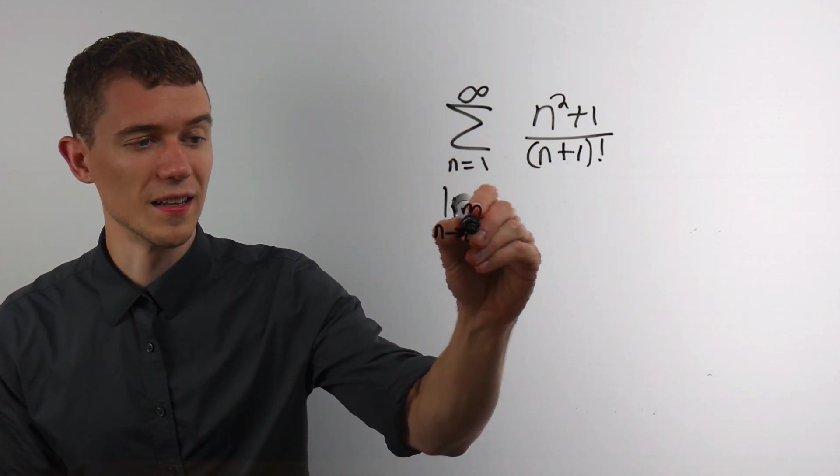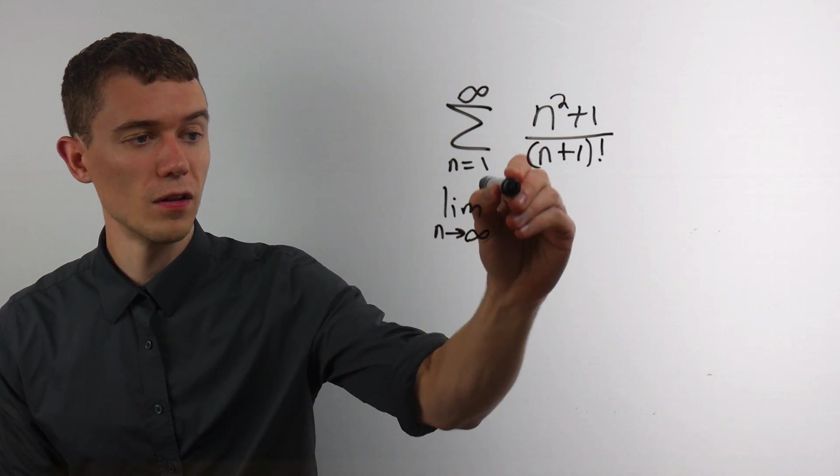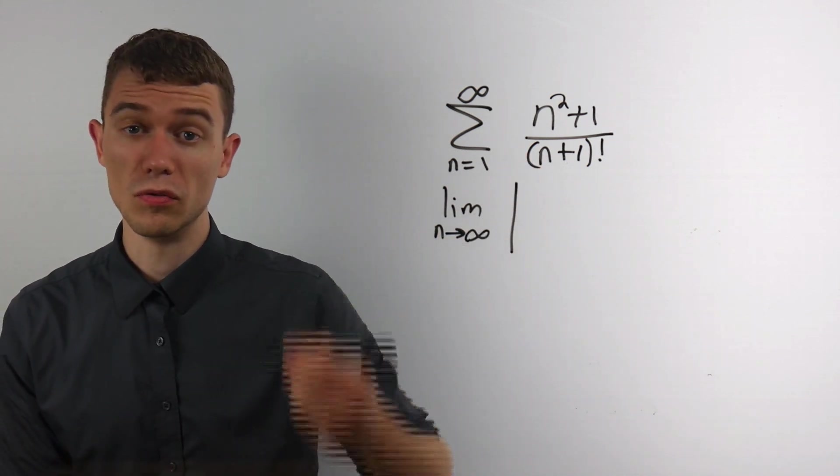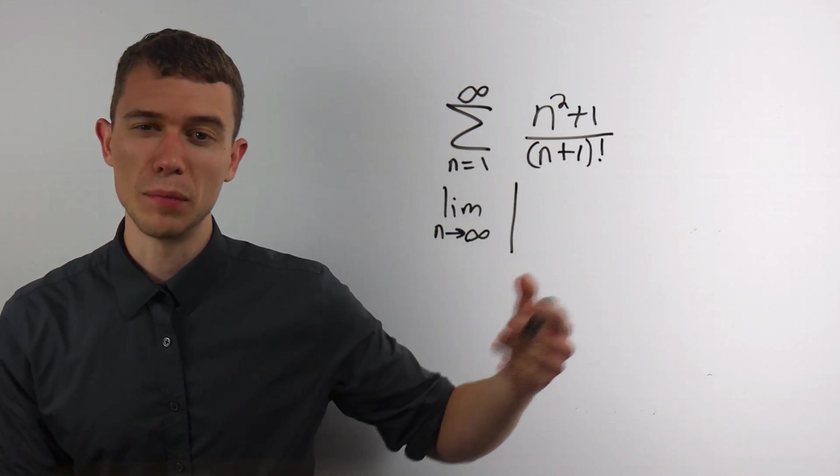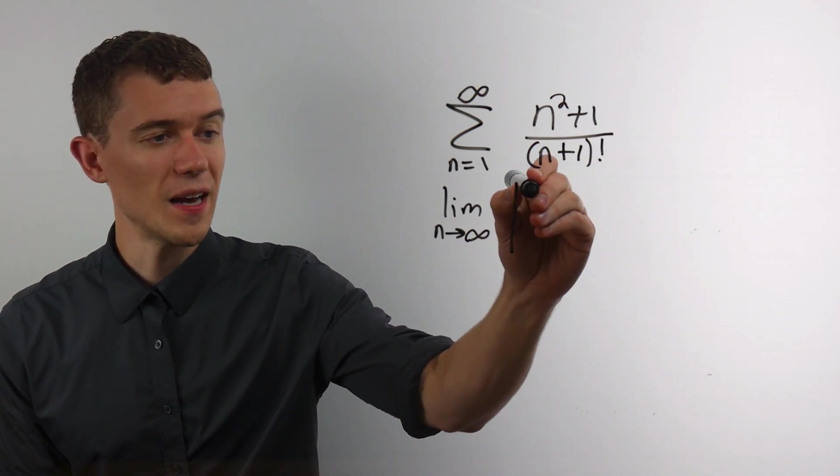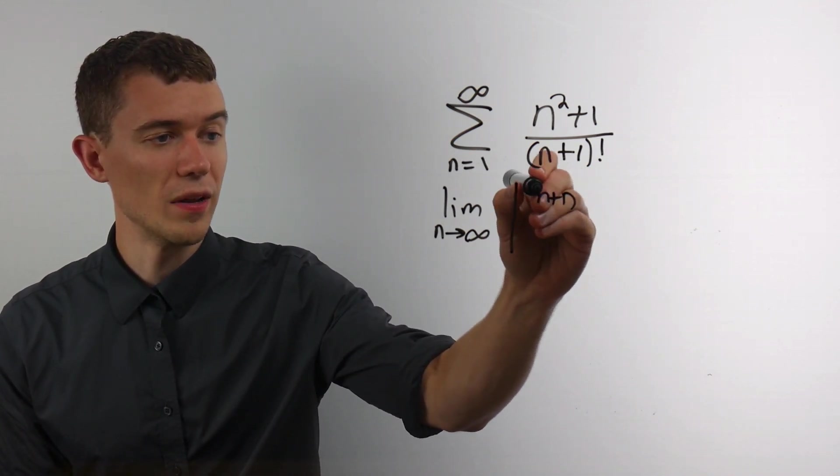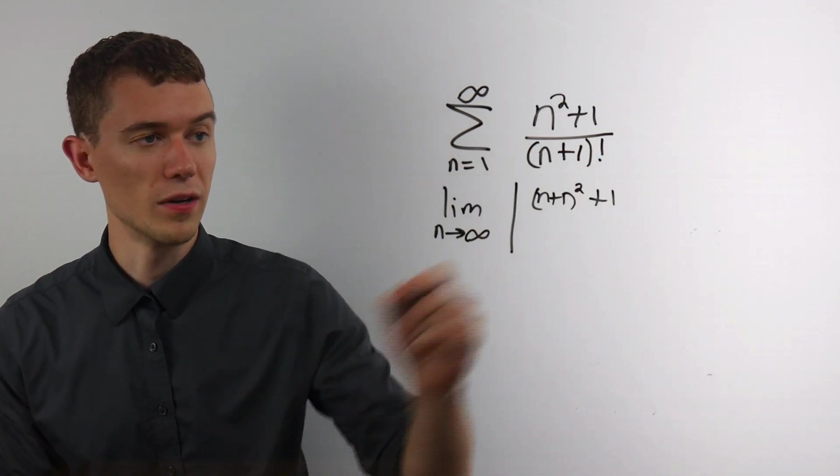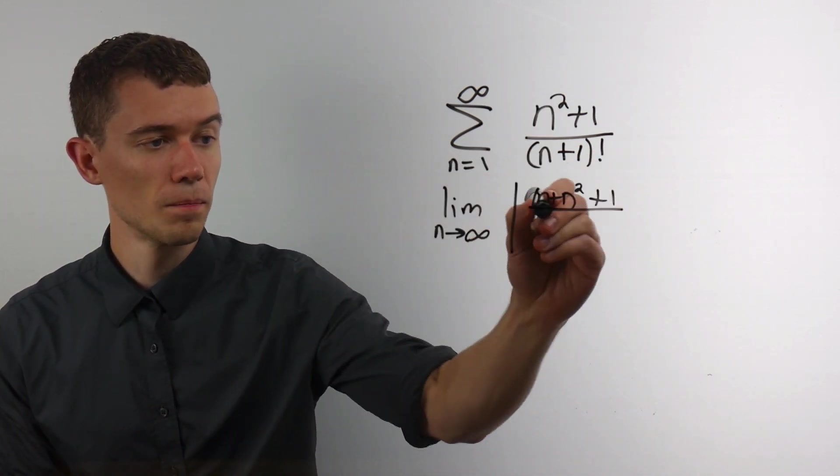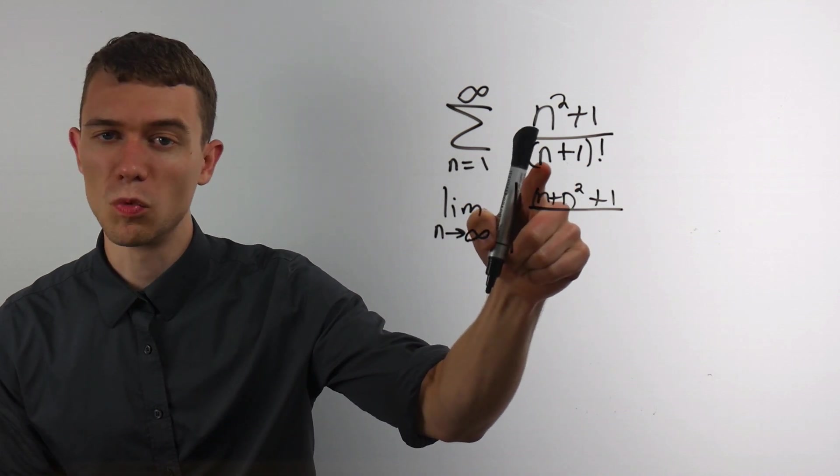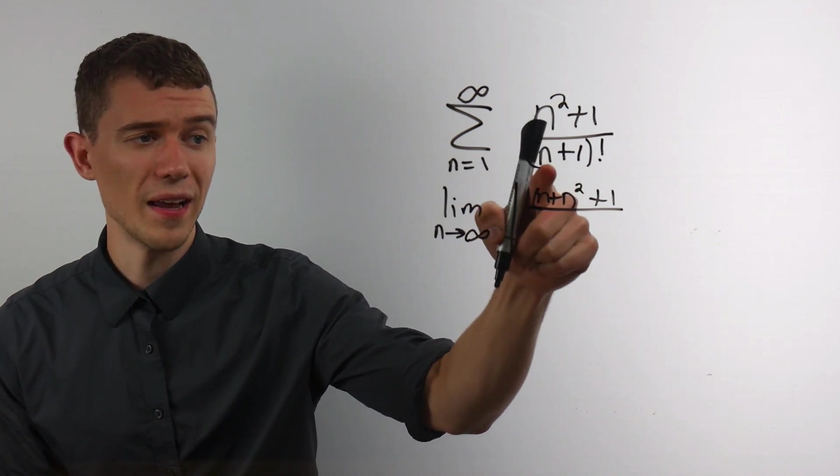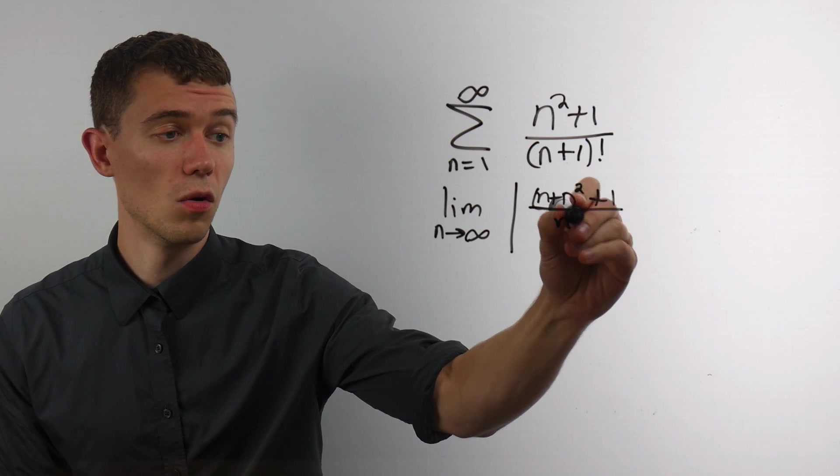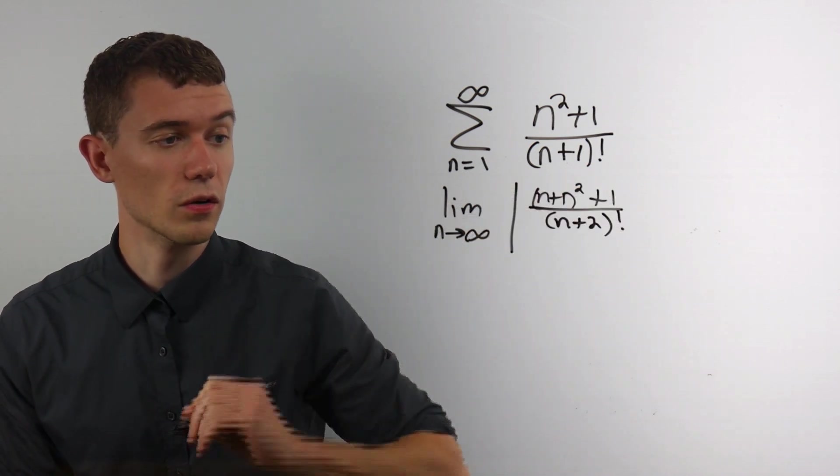The ratio test says it's the limit as n grows infinitely large of the absolute value of a sub n plus 1. What does that mean? That means everywhere I see an n, I will insert n plus 1. So I have to put an n plus 1 inside there. If I put an n plus 1 in here, there will be n plus 1 plus 1 or n plus 2 inside the factorial.